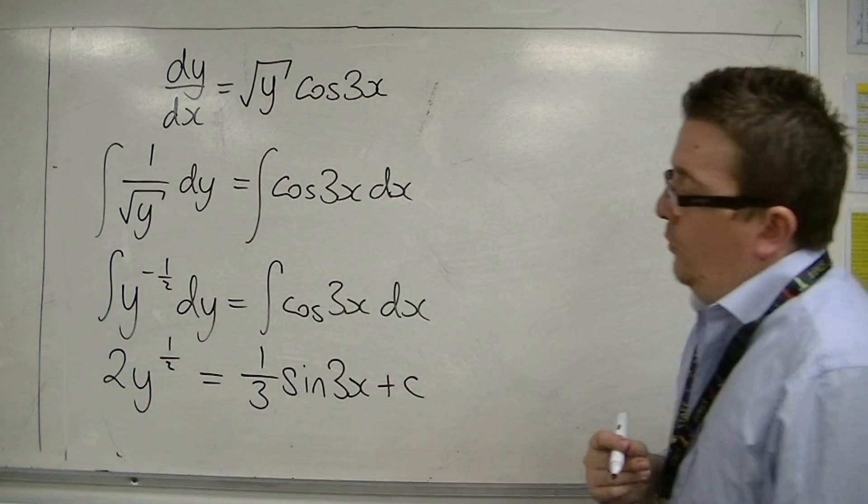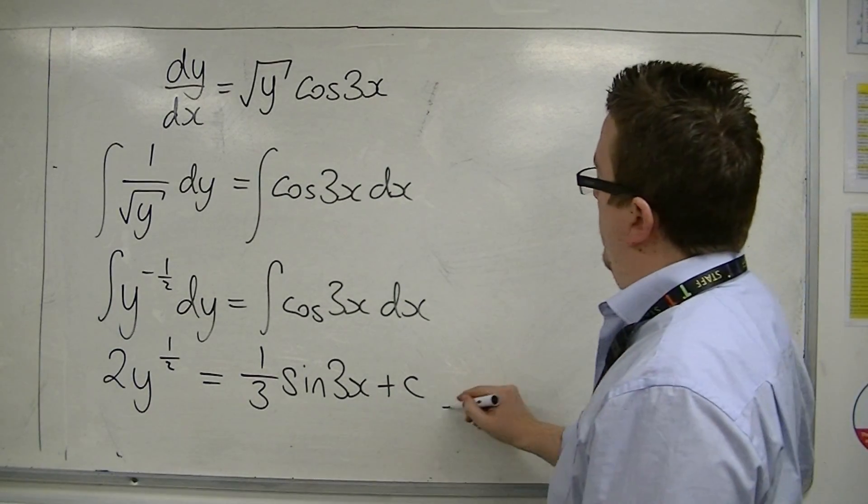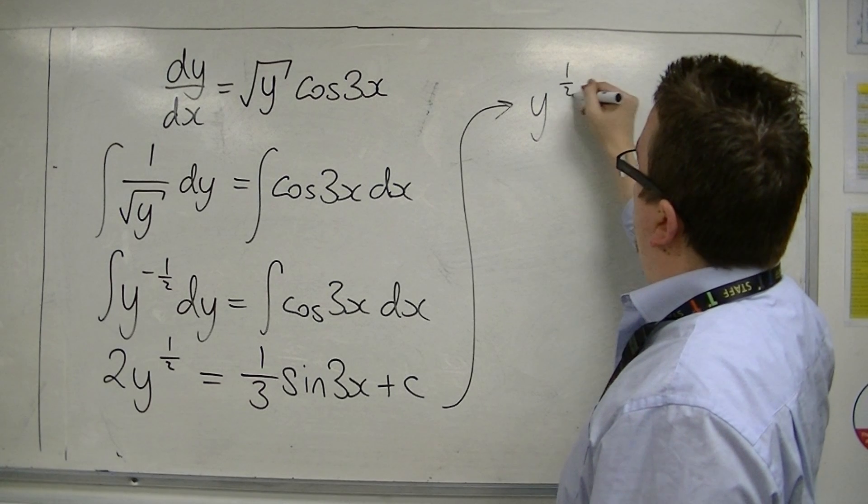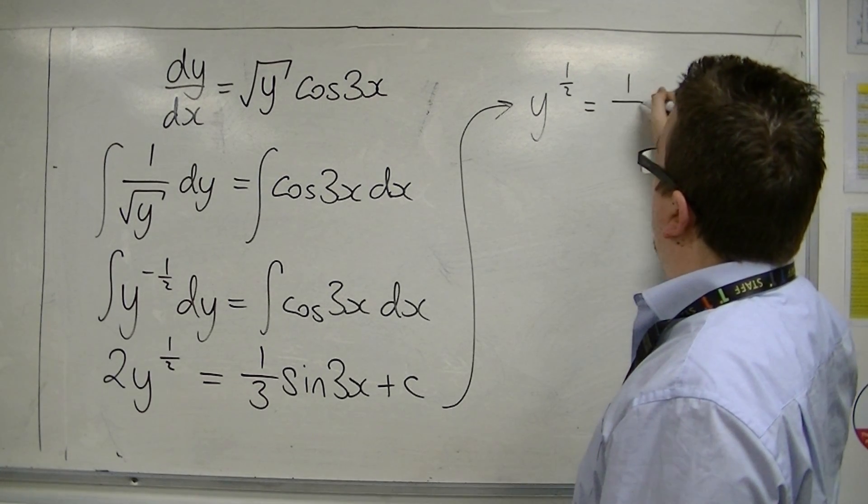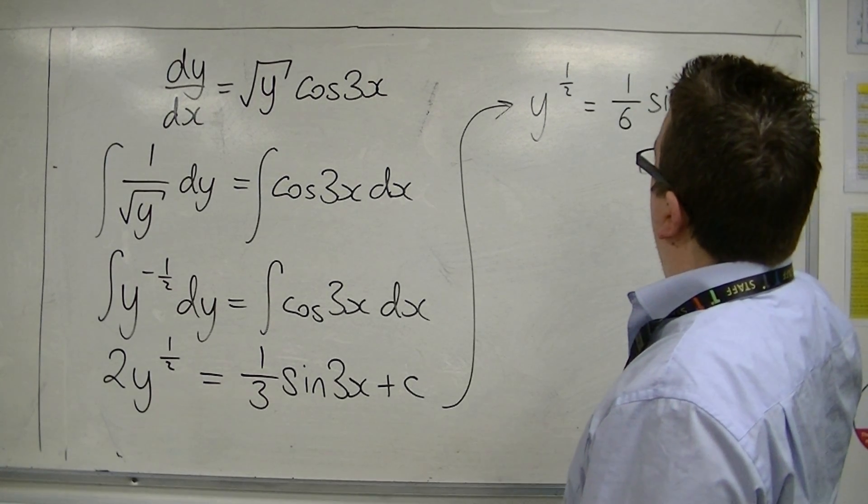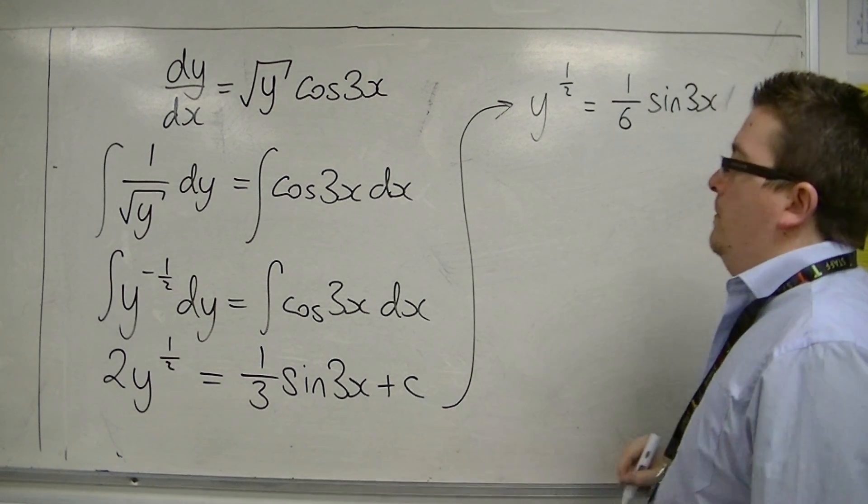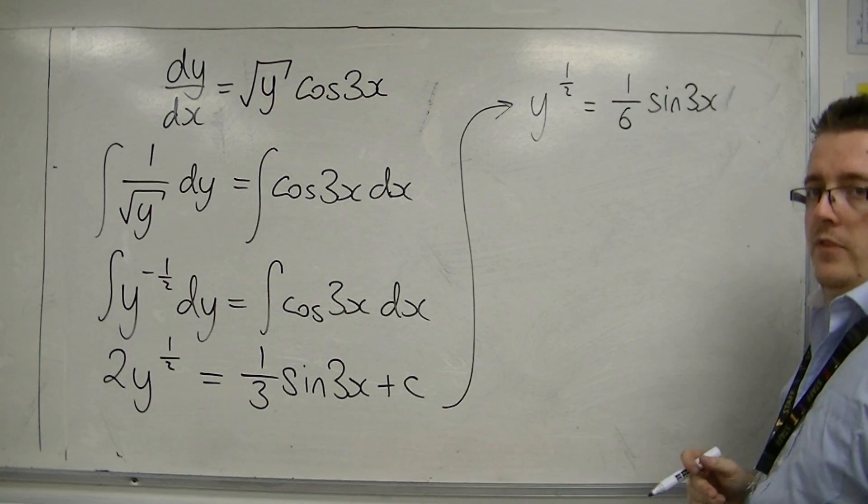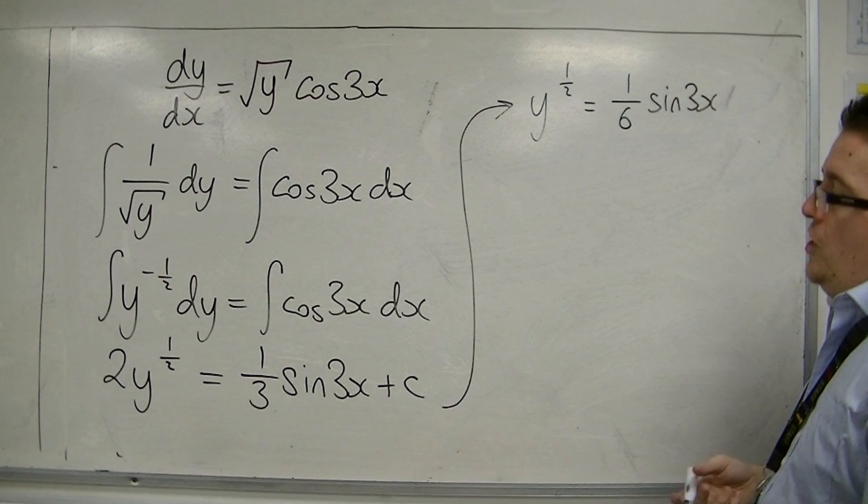I'm going to divide all the way through by 2 here. So I get y to the half equals 1/6 sin 3x. And then, I'm going to divide c by 3, but I could just choose another letter.